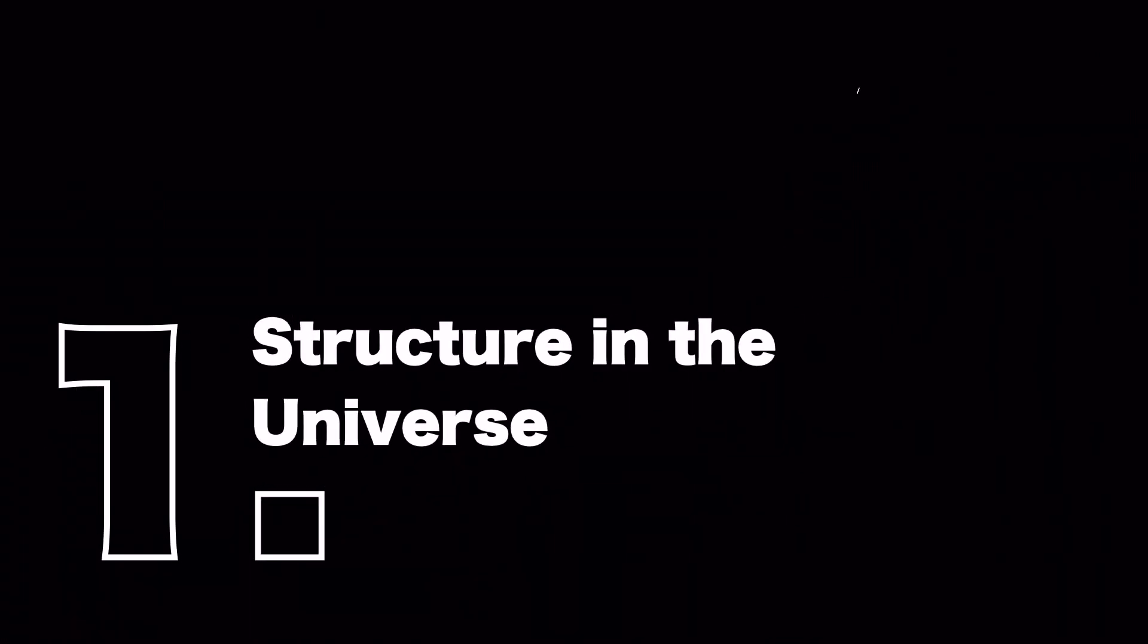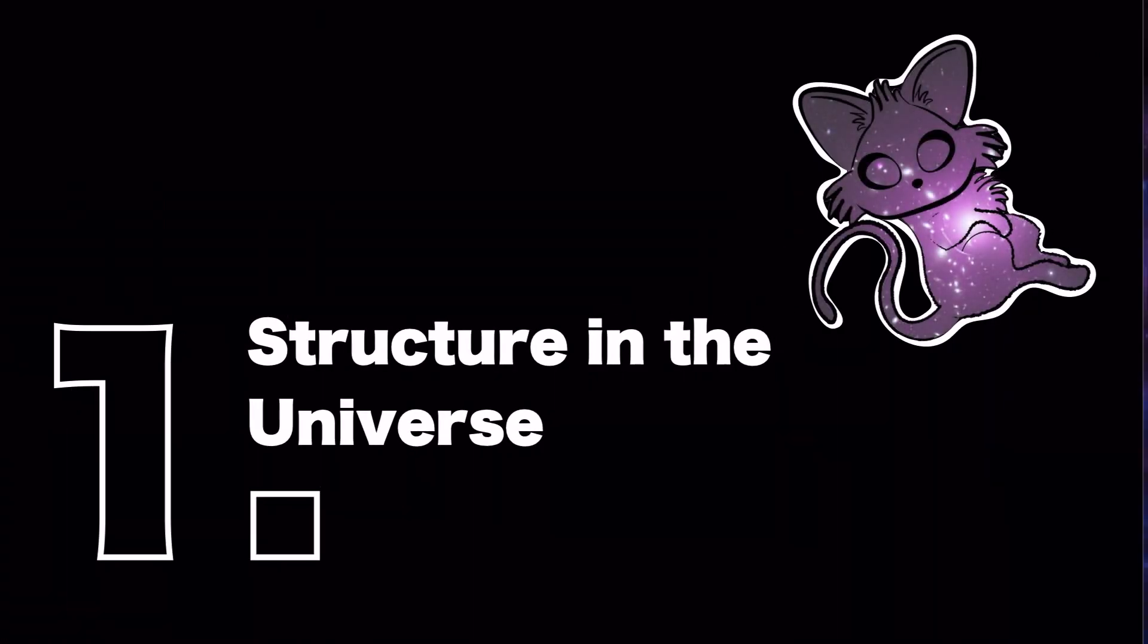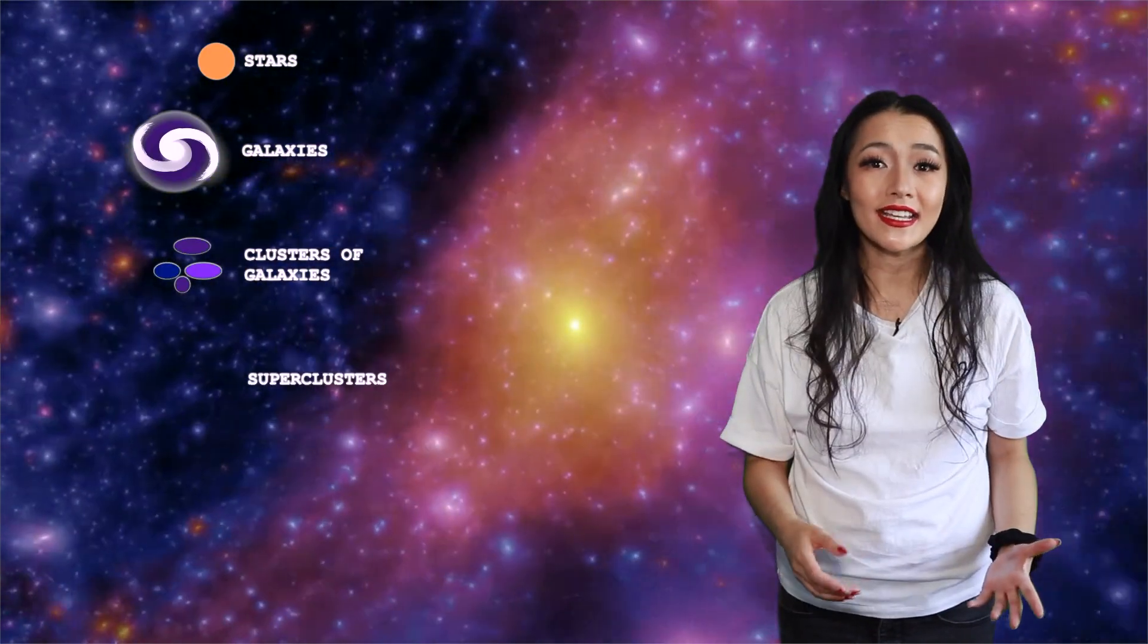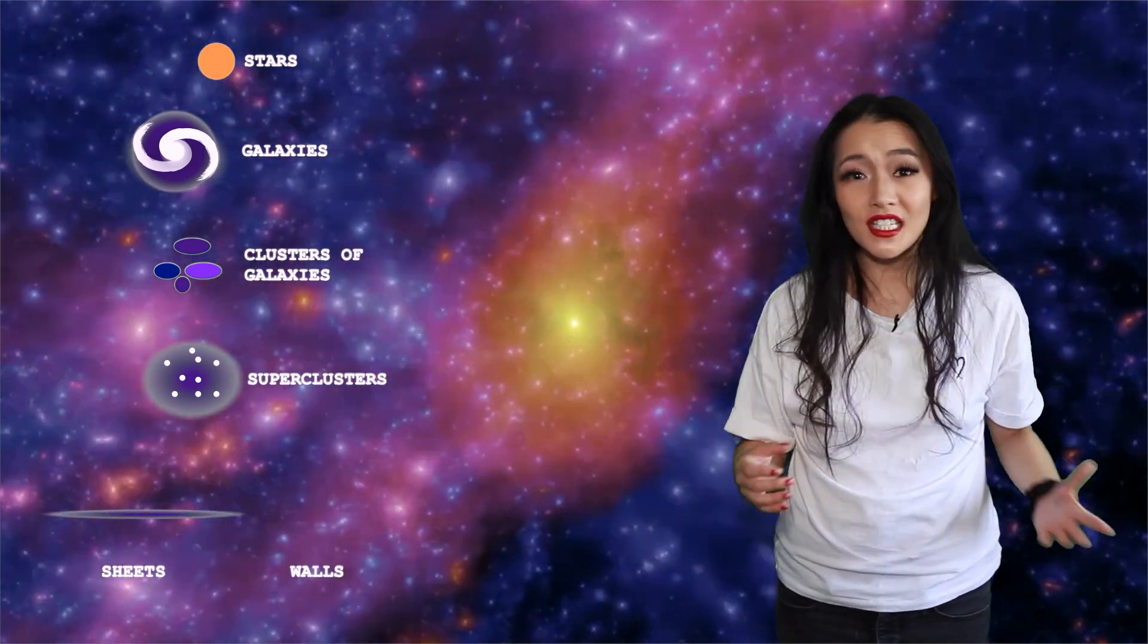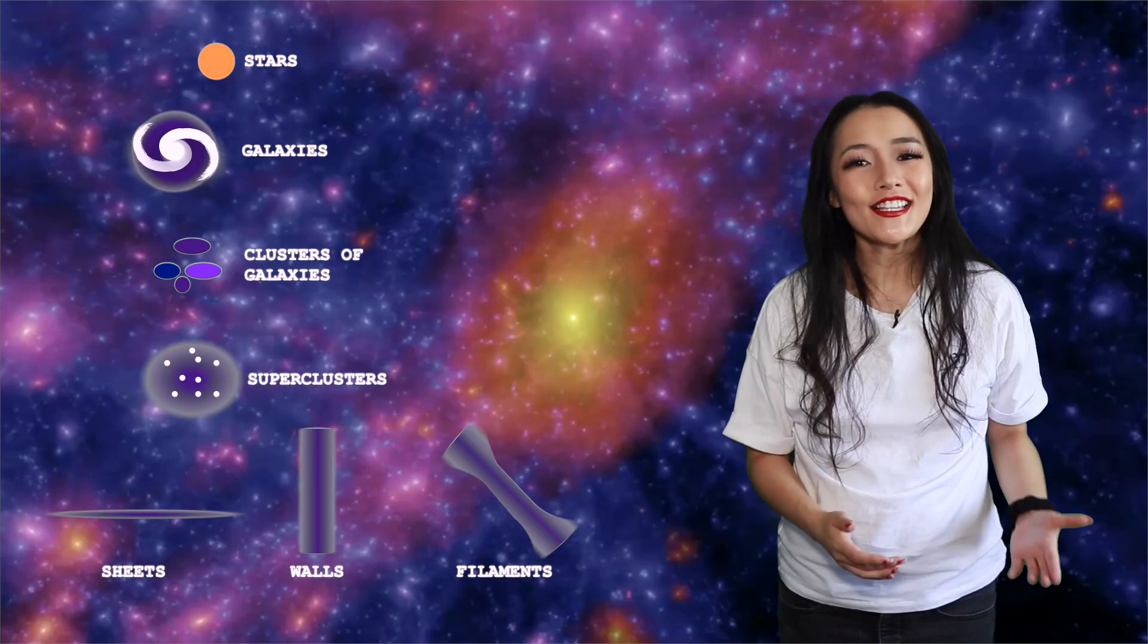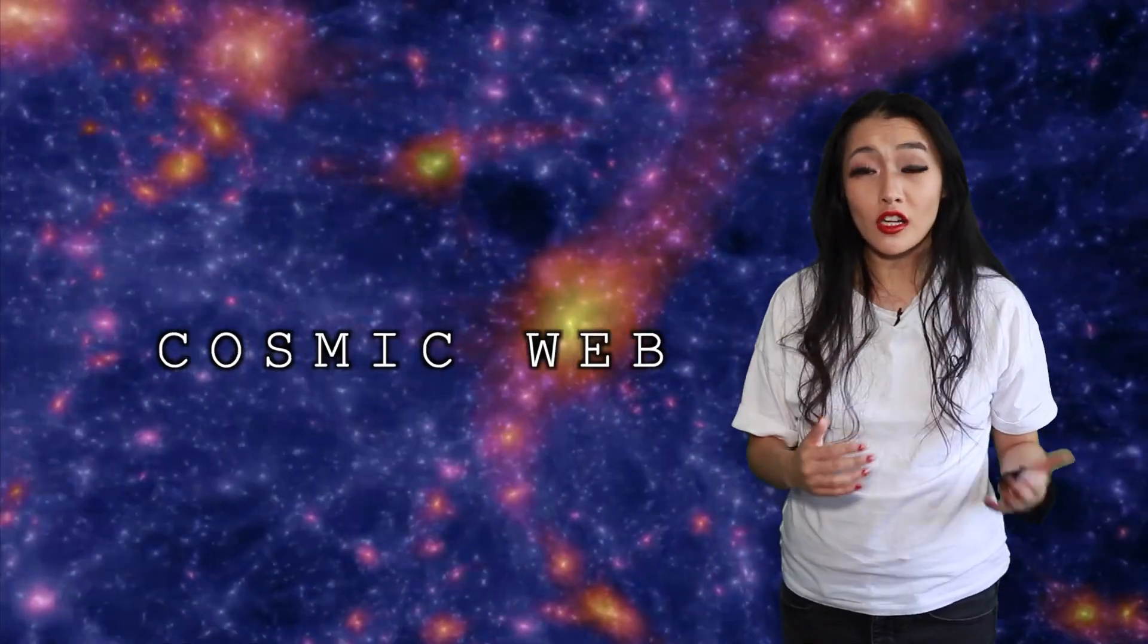The universe that we live in is extremely well structured, a hierarchy of stars within galaxies within clusters of galaxies within super clusters and connected through sheets, walls and filaments. Between these structures are vast regions of empty space known as voids. On large scales they make up the cosmic web.